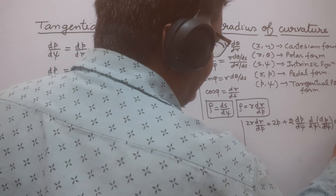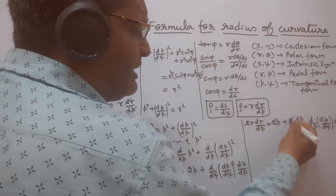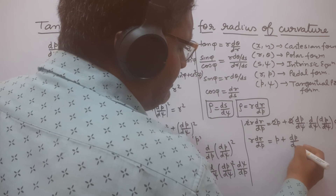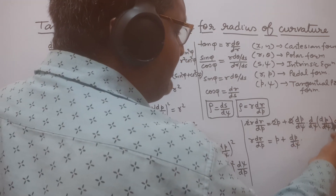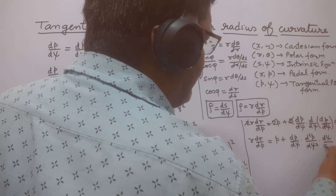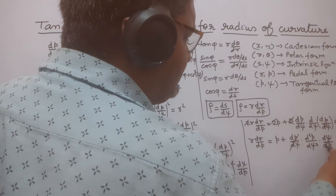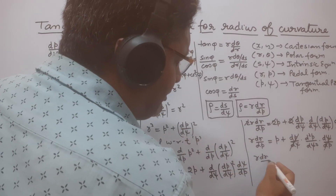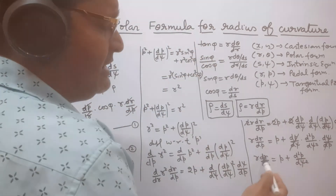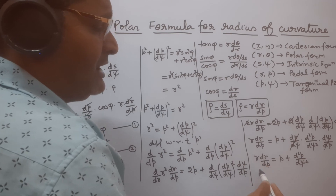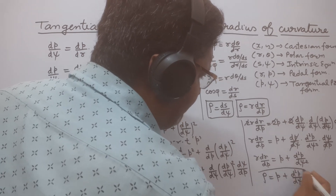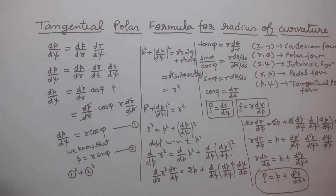So we can see that in each term these two cancel out. Here r dr/dp is equal to p plus dp/dψ multiplied by, when we differentiate dp/dψ with respect to ψ we get d²p/dψ², multiplied by dψ/dp. So dp/dψ and dψ/dp cancel, giving r dr/dp = p + d²p/dψ². We know that r dr/dp is the radius of curvature of the pedal equation, so here we can write ρ = p + d²p/dψ². This is the formula for radius of curvature for the tangential polar form of a curve.